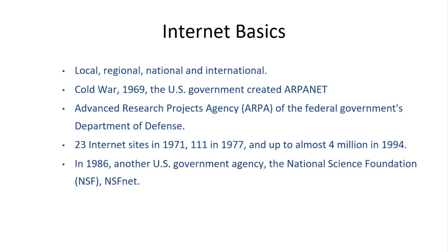In 1969, the US government created ARPANET, connecting western universities and allowing researchers to use the mainframes of any of the networked computers. ARPANET was a project of the Advanced Research Projects Agency. There were 23 internet sites in 1971, 111 in 1977, and up to almost 4 million in 1994. In 1986, another US government agency, the National Science Foundation, set up a network of five supercomputer centers called NSFNET. The internet has millions of users worldwide and is referred to as the web.